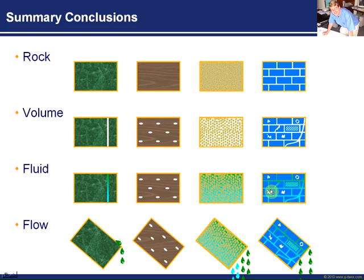So this is my summary. My summary is we started out trying to understand the rock — the volume fraction, the porosity, storativity, capacity of the rock, the fluids within it, and the flow capacity we've sort of touched on in the last sections here, and the ability of this rock to actually have fluids flow through it.